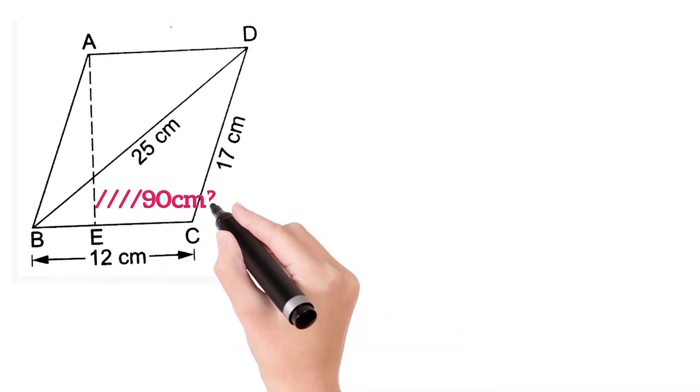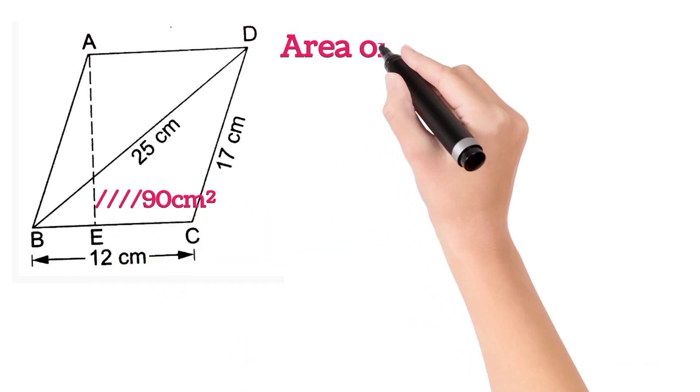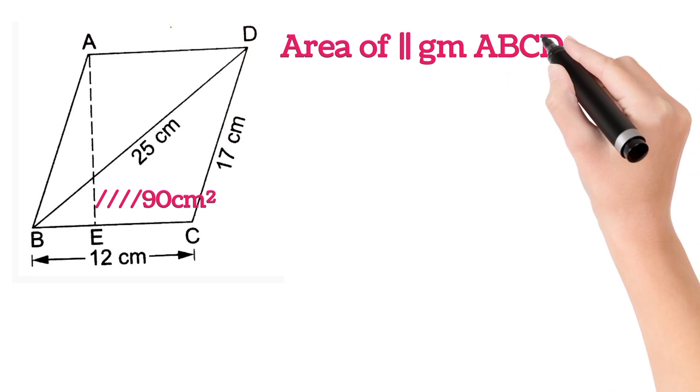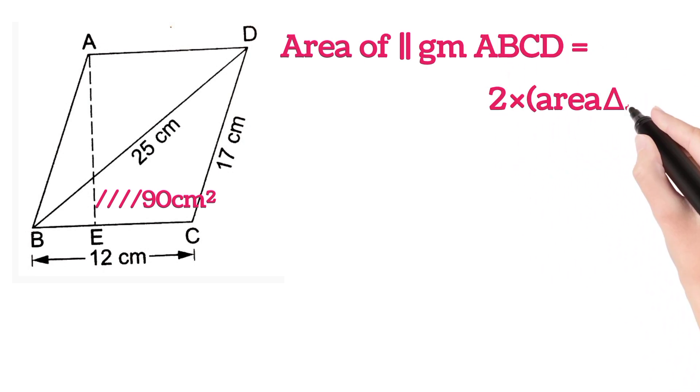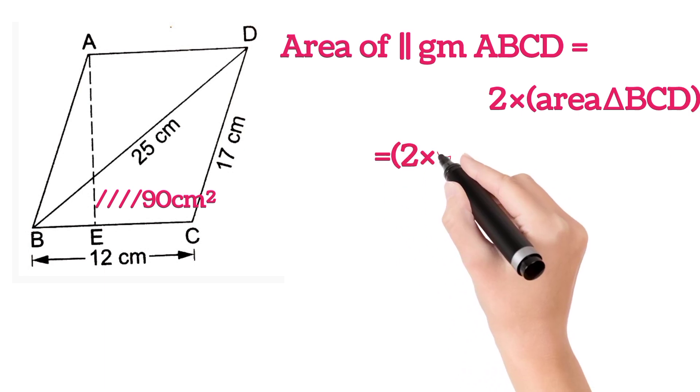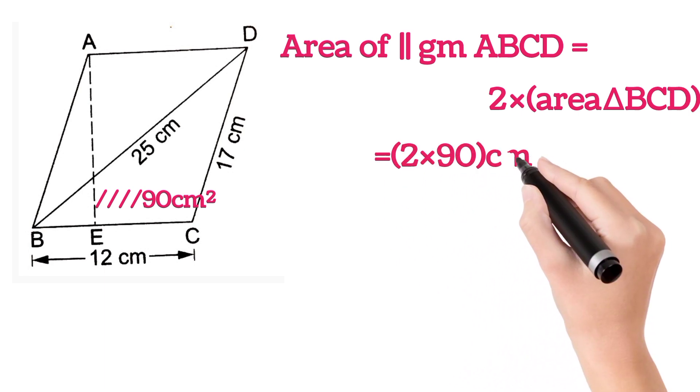So this triangle is 90 centimeters squared. Now area of parallelogram ABCD is equal to twice the area of triangle BCD, which is 90. So on substituting, we will get 2 into 90, that is 180 centimeters squared.